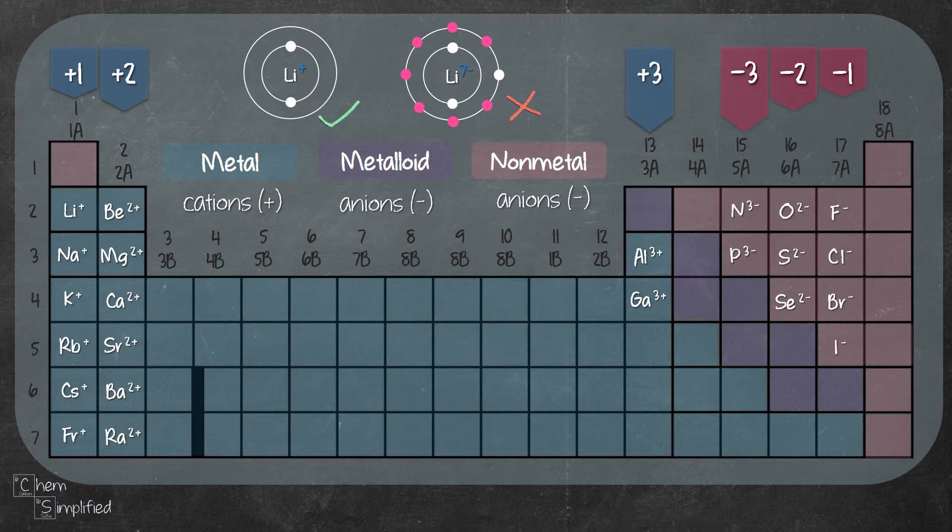As you can see, it's pretty straightforward to determine the charge of ions in the main group. Main group are the elements with group A.